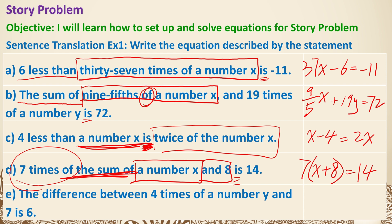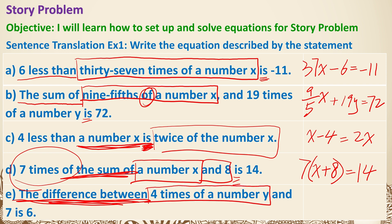The difference between 4 times the number y and 7 is 6. 'The difference between' prompts us to find at least two numbers. The first one is 4 times the number y, so 4y. Since we're calculating the difference, we subtract 7. The word 'is' means equals 6. These are some sentence translation practice.